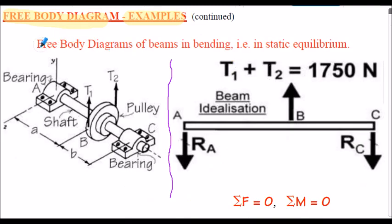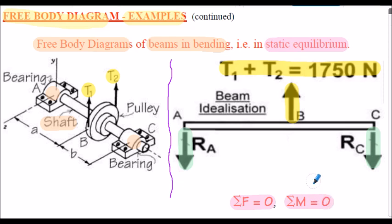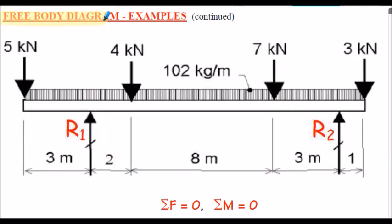Here's a free-body diagram of a beam in bending. The scenario shown is a shaft supported in bearings at each end with applied loading due to the tensions in a belt wrapped around a pulley — the applied load shown with this arrow. This load is reacted on the bearings at ends A and C. This is a static analysis, applying Newton's first law — summation of all forces equals zero and summation of all moments about a point equals zero.